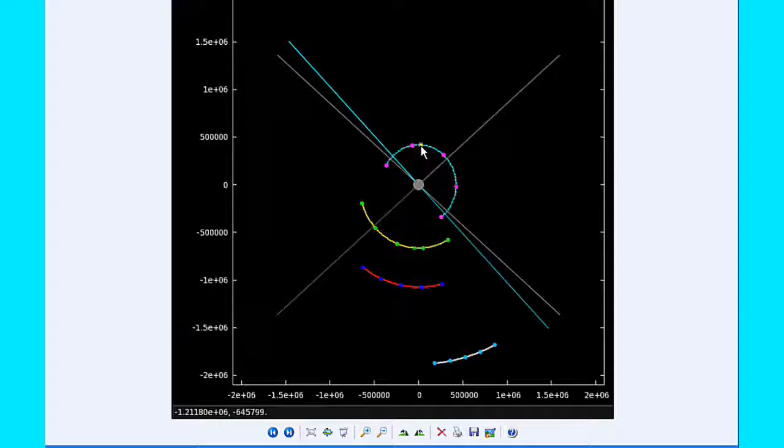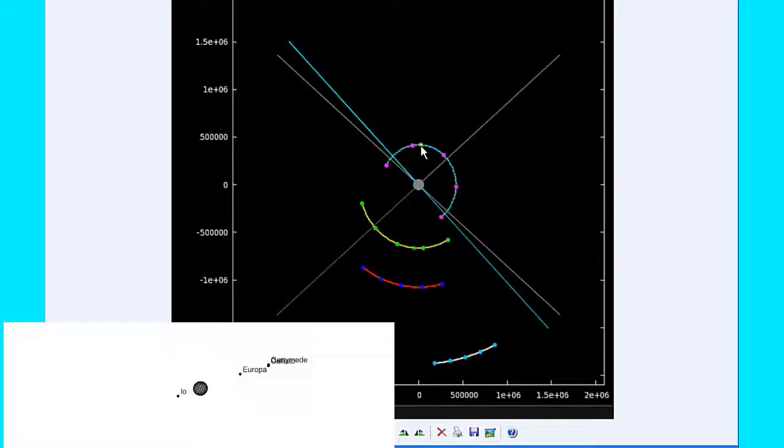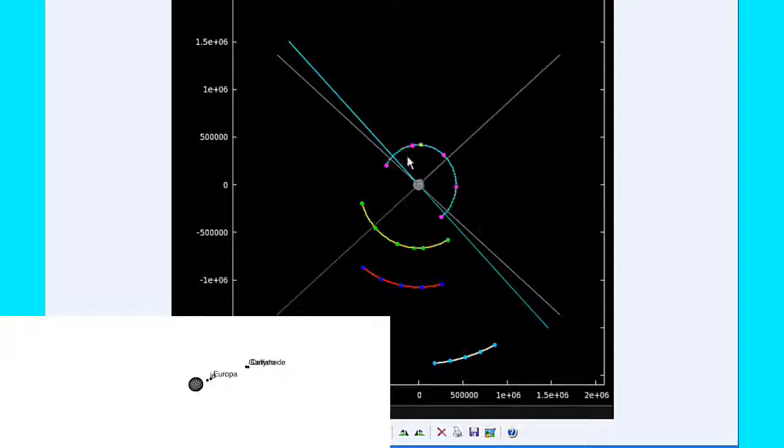By 18 hours UTC, Io is still firmly in quadrant two heading west. Europa, Ganymede, and Callisto all continue in quadrant four heading east. And by zero hours UTC tomorrow, Io has transited Jupiter and is now in quadrant three heading west.